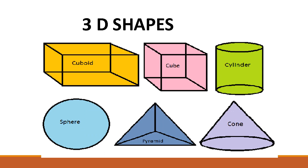Students, let us learn the spellings of 3D shapes. First one: Cuboid — C-U-B-O-I-D. Cuboid. Next: Cube — C-U-B-E. Cube.